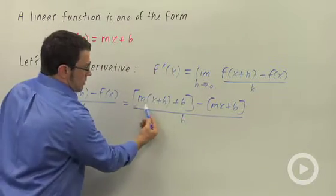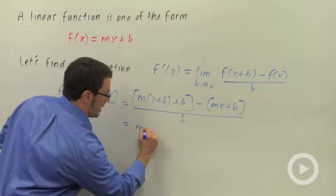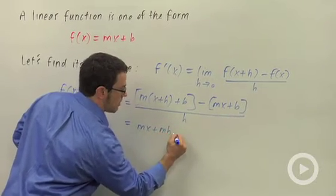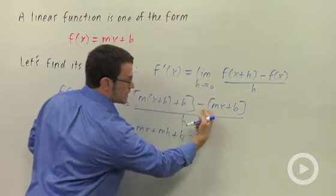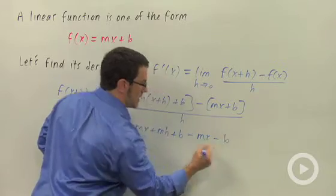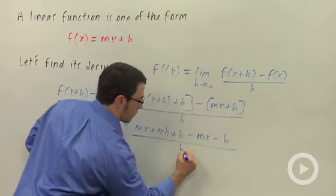So let's distribute the m. I get mx plus mh plus b minus, and I have to distribute this minus sign over both of these terms. So minus mx and minus b. All of that over h.